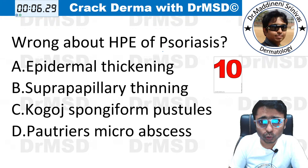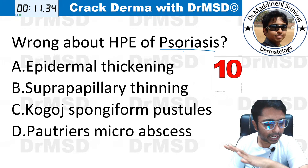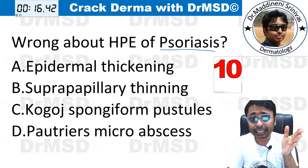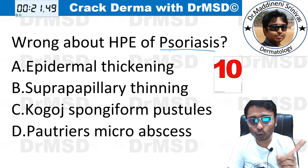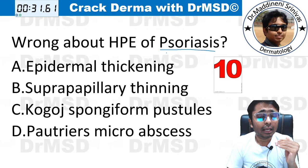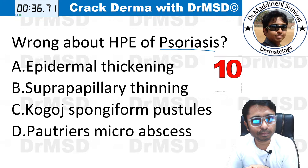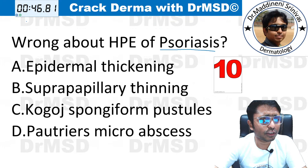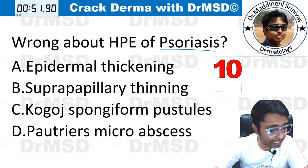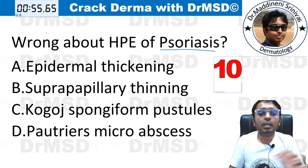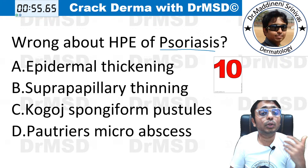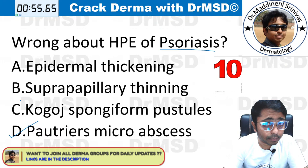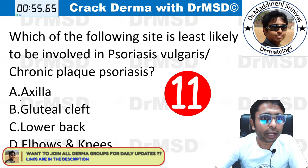Question number 10. Wrong about the histopathological examination of psoriasis — these are very important and most expected questions. Is it: A — epidermal thickening; B — suprapapillary thinning; C — Kogoj spongiform pustules; or D — Pautrier's microabscess? MVRL, Sanjia, and Hamot answered option D. Those who don't know the trick may find it a little difficult. The answer is option D — Pautrier's microabscess — which is the odd man out.